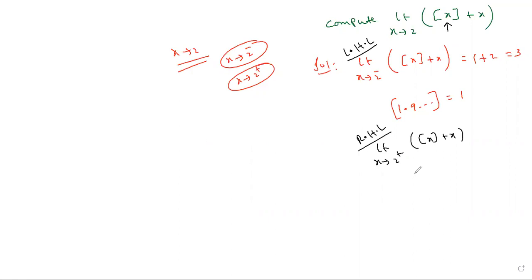Then RHL, limit x tends to 2 plus, step x plus x, which is equal to 2 plus... greater than 2 but very near to 2. So there is something 2.0001, very minute value and greater.